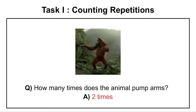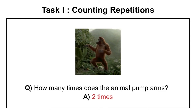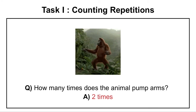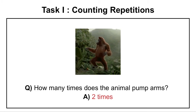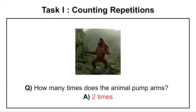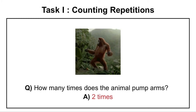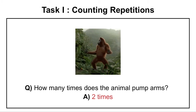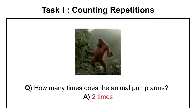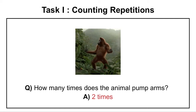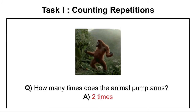Let me highlight some of our proposed tasks. The first is counting repetitions. In this task, a system is required to identify which action is being repeated and how many times. For example, given this video and the question — how many times does the animal pump arms — the system will have to identify which region in the video contains a repeating action and count its number of repetitions. In this case, two times.